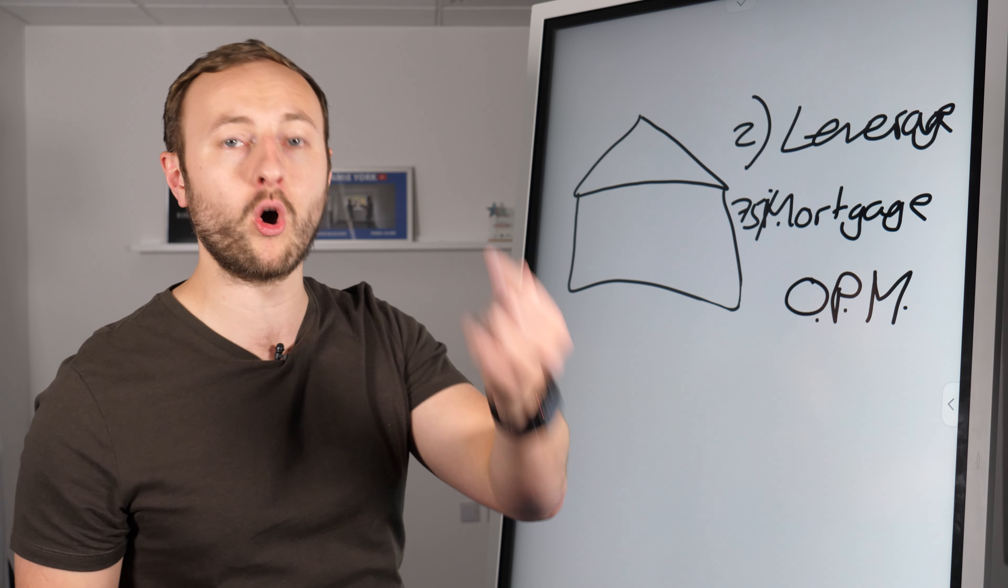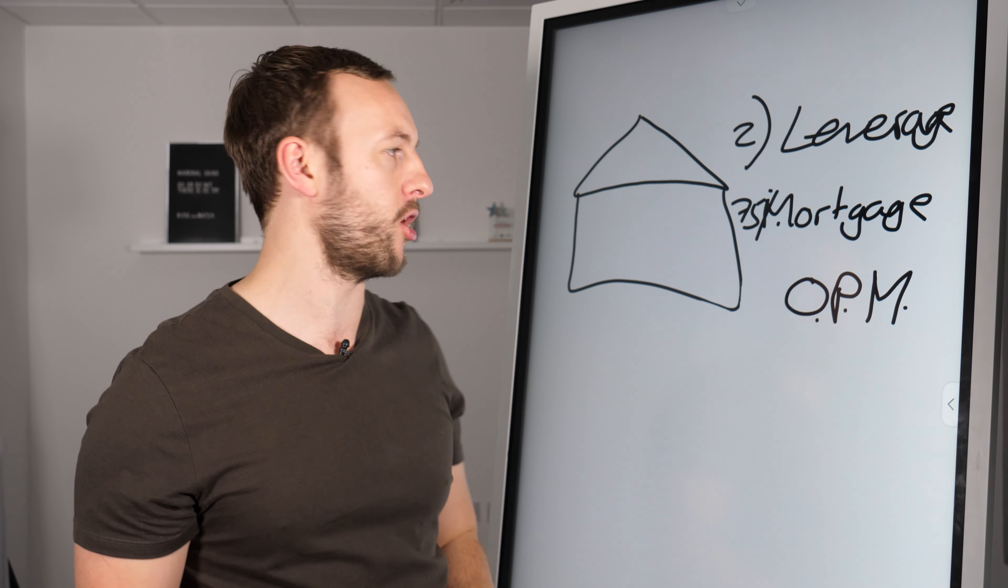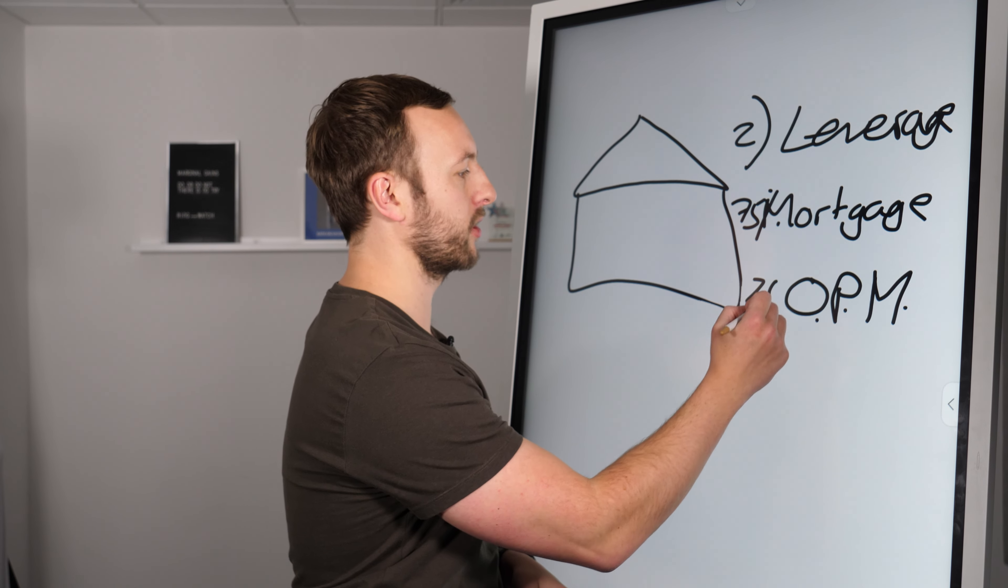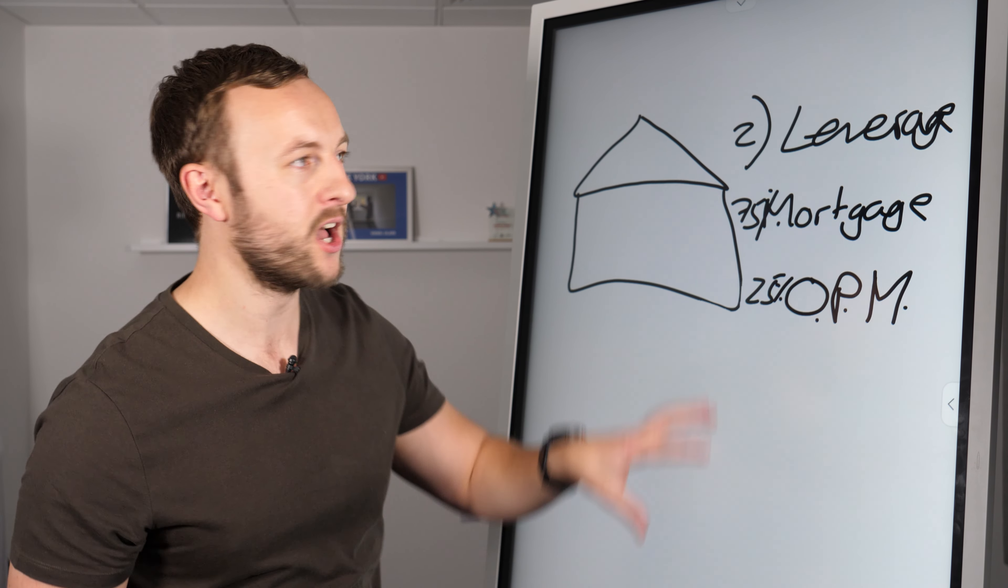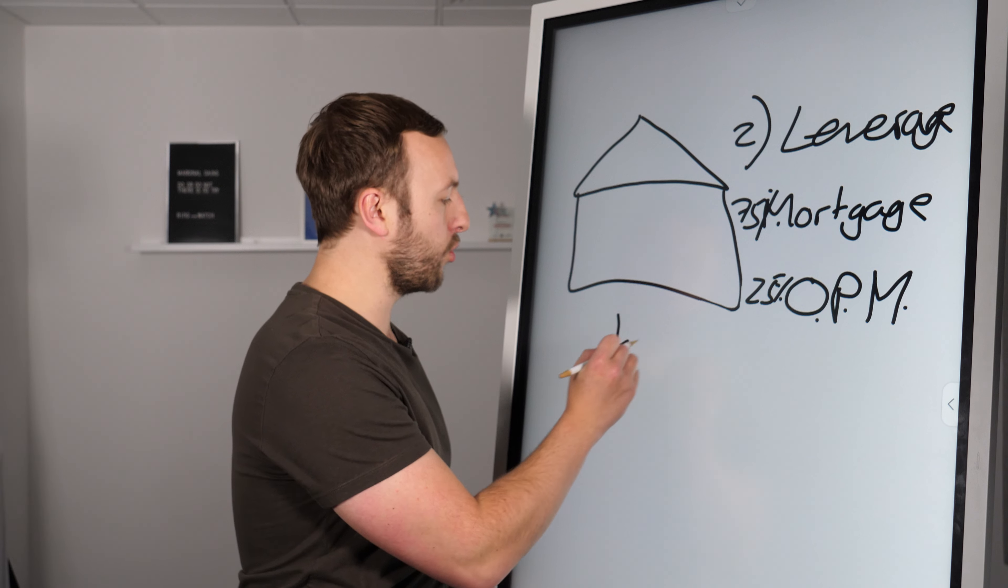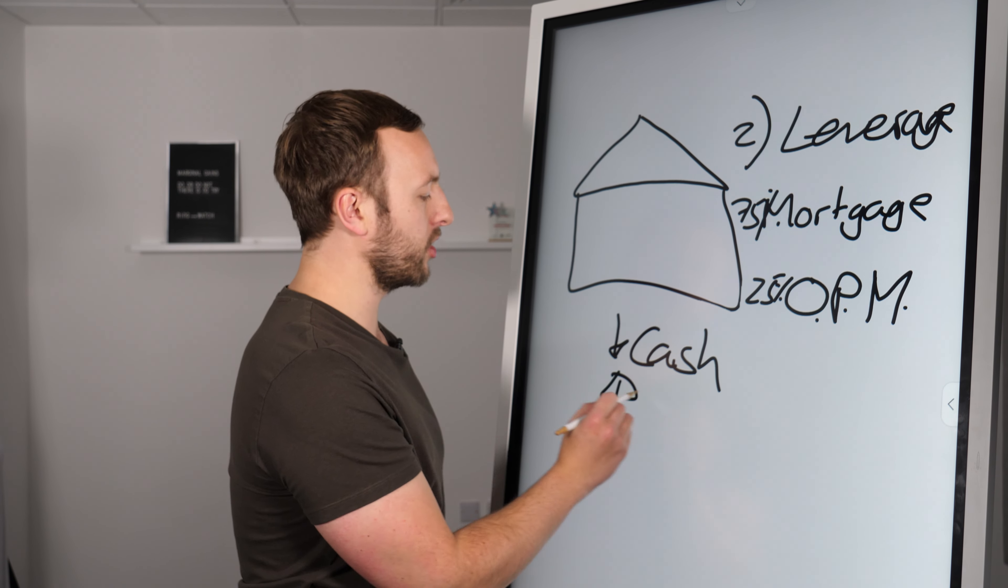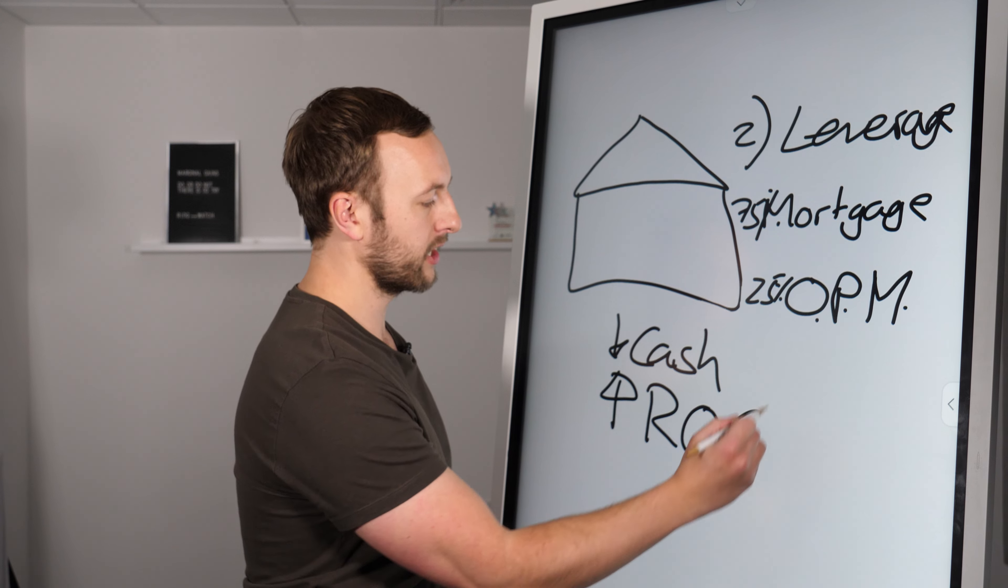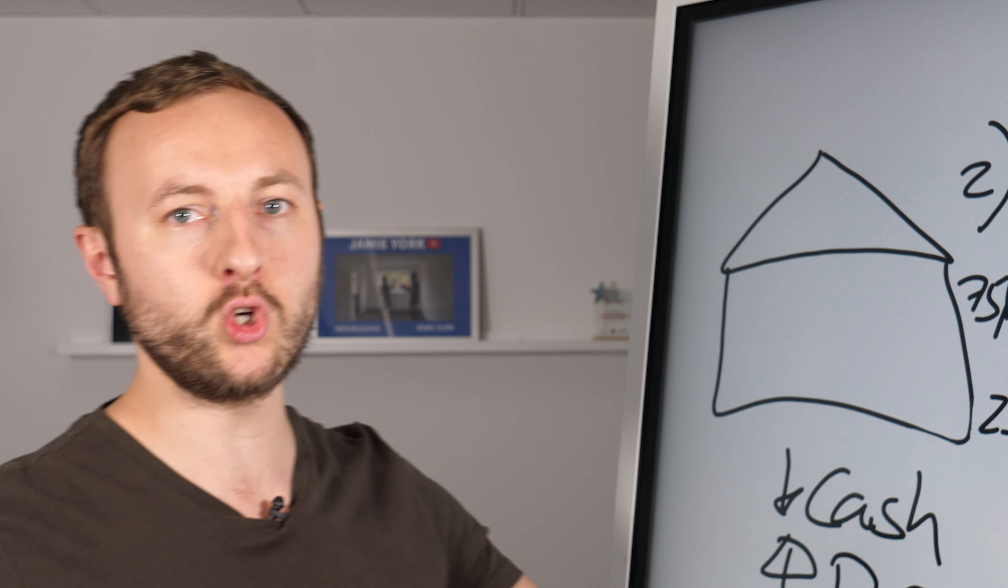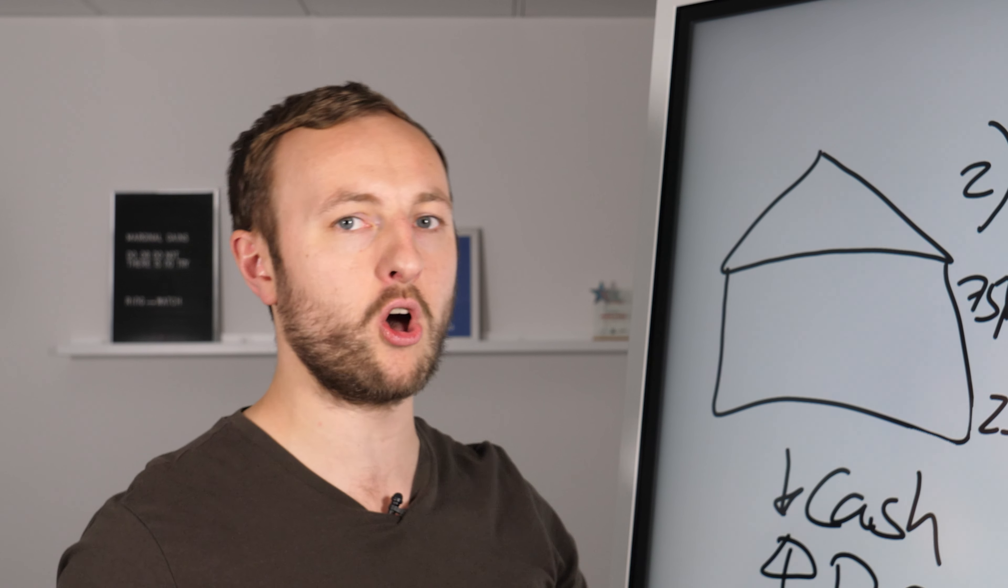Mortgage companies that will fund 75% of the purchase, and then other people that will loan you on, it's called bridging terms, 25% of the money. What this means is the lower amount of your cash in the property, the higher the return on cash employed. So you will get a much higher return on that.